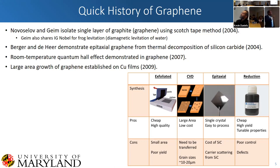Around the same time, Claire Berger and Walt de Heer also demonstrated epitaxial graphene via thermal decomposition of silicon carbide. People were more interested in the exfoliated graphene because of material quality — you're able to do a lot more interesting physics if your material quality is better.